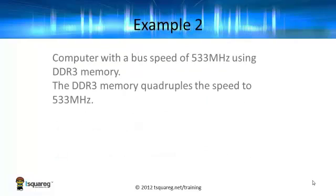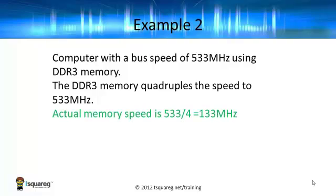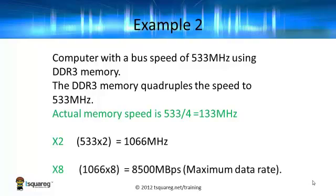Let's try another one. A computer with a bus speed of 533 MHz is using DDR3 memory. DDR3 quadruples the speed to 533 MHz — it multiplies it by a factor of 4 — which means the actual memory speed must be a quarter of that, and you can see there it's 133 MHz. How do we work out the maximum data rate? Multiply by 2 and multiply by 8, and there we have it: 8,500 MB per second.